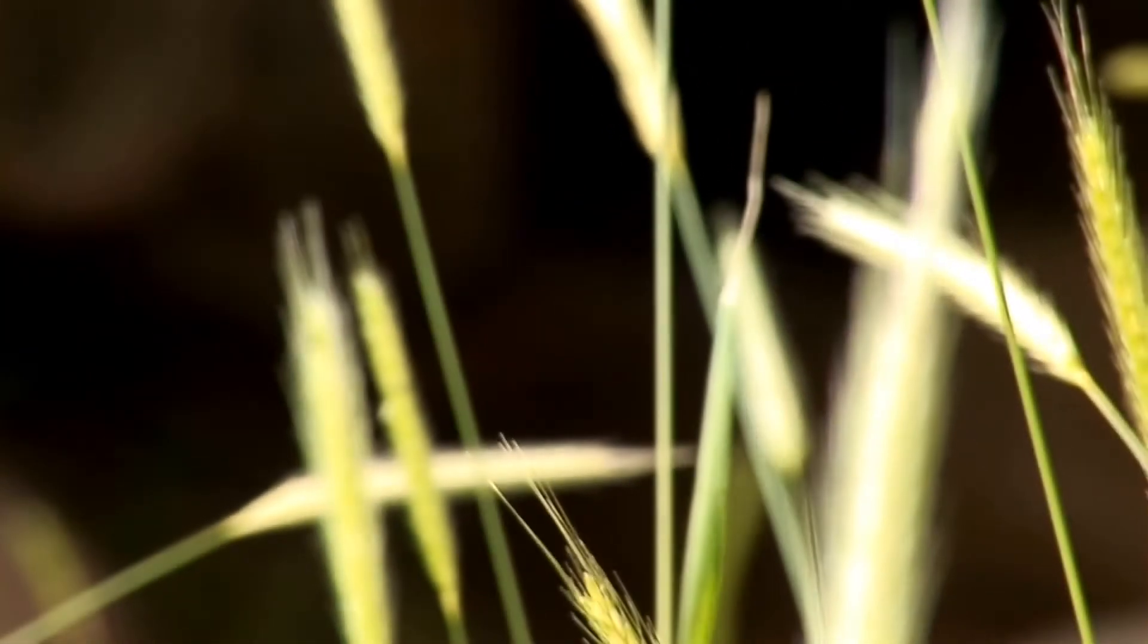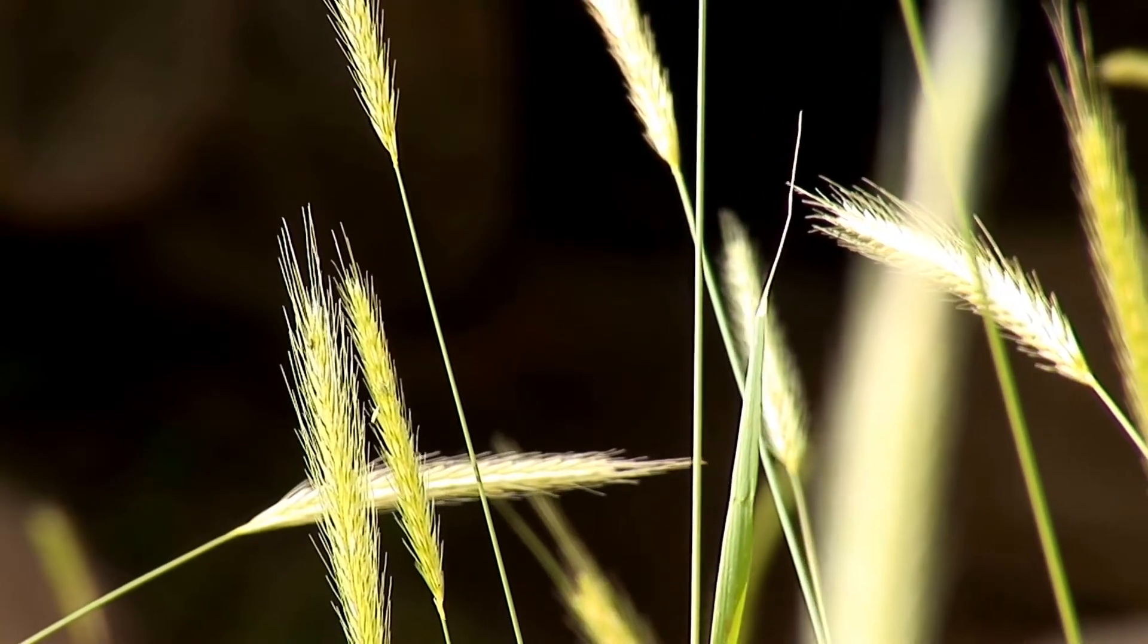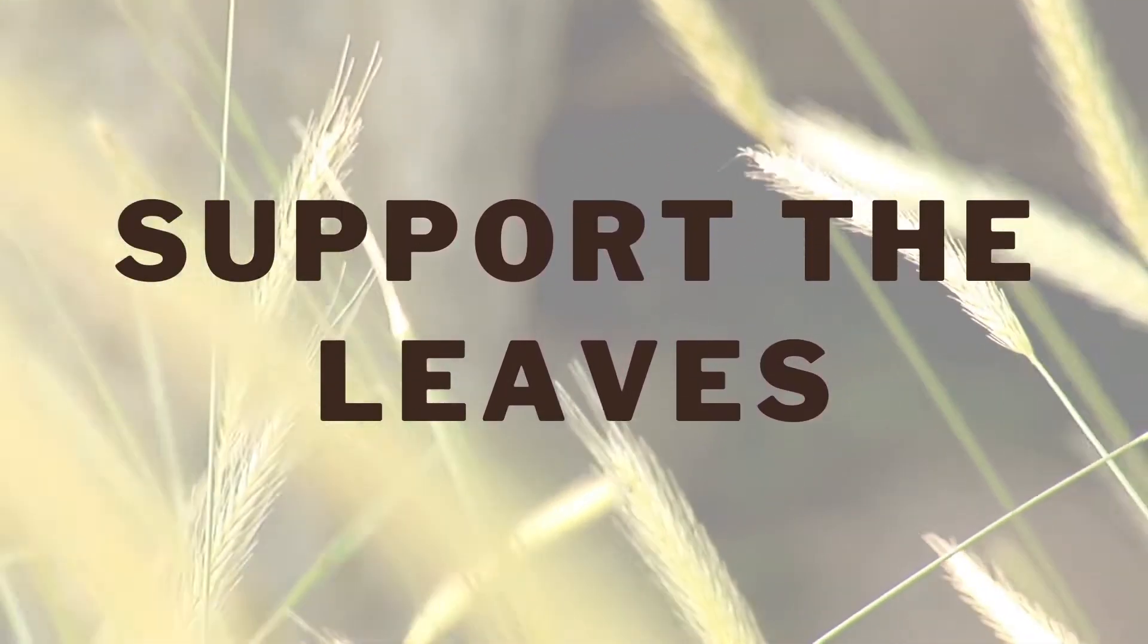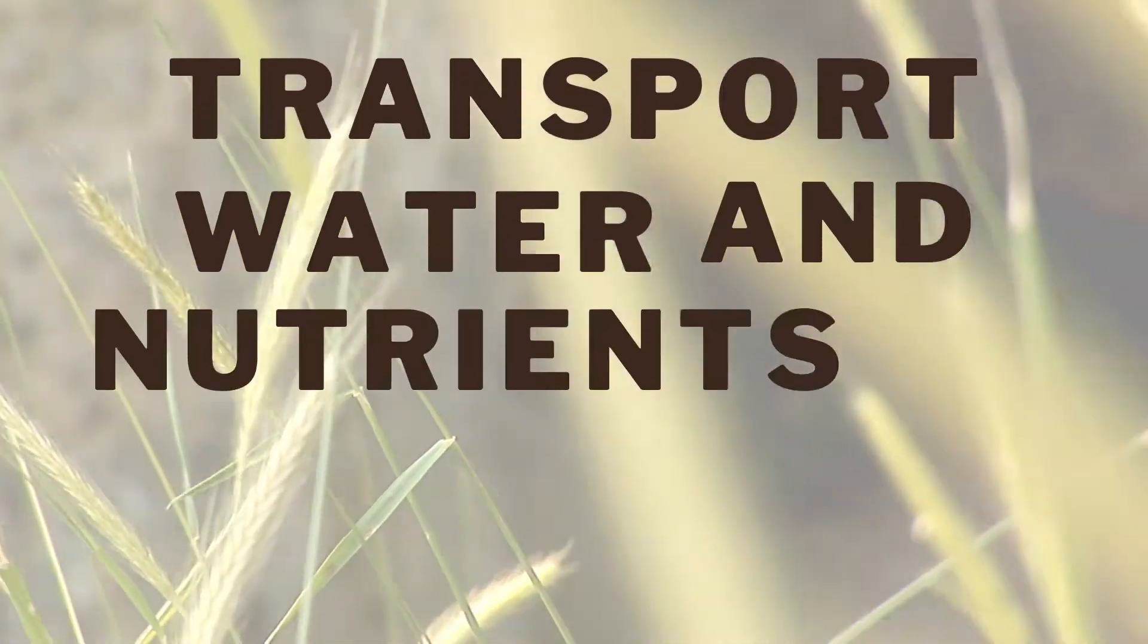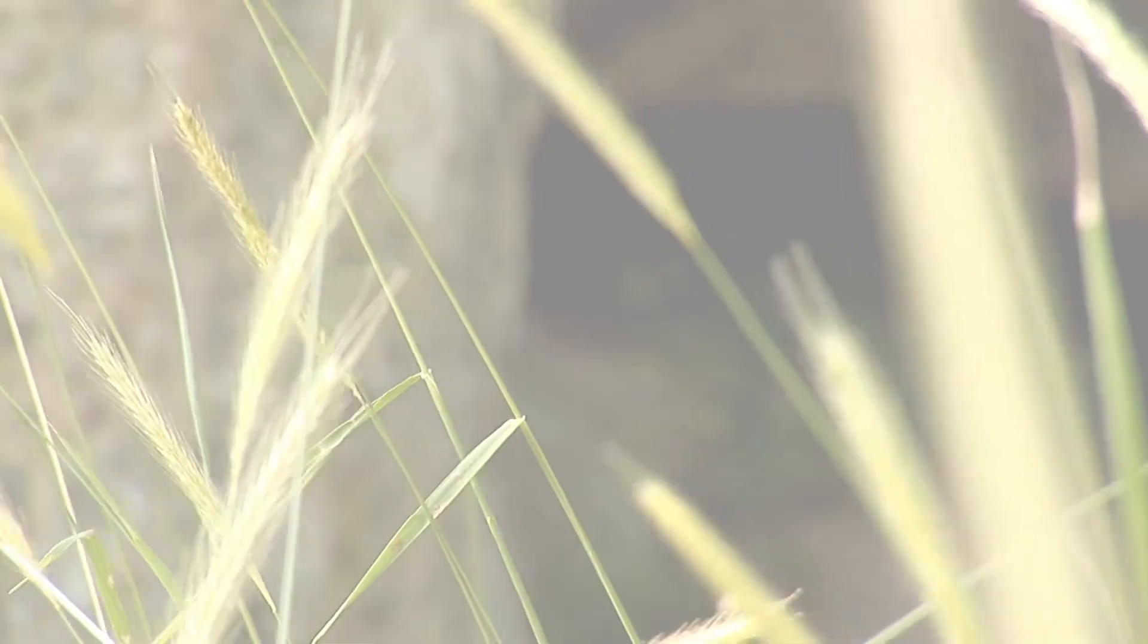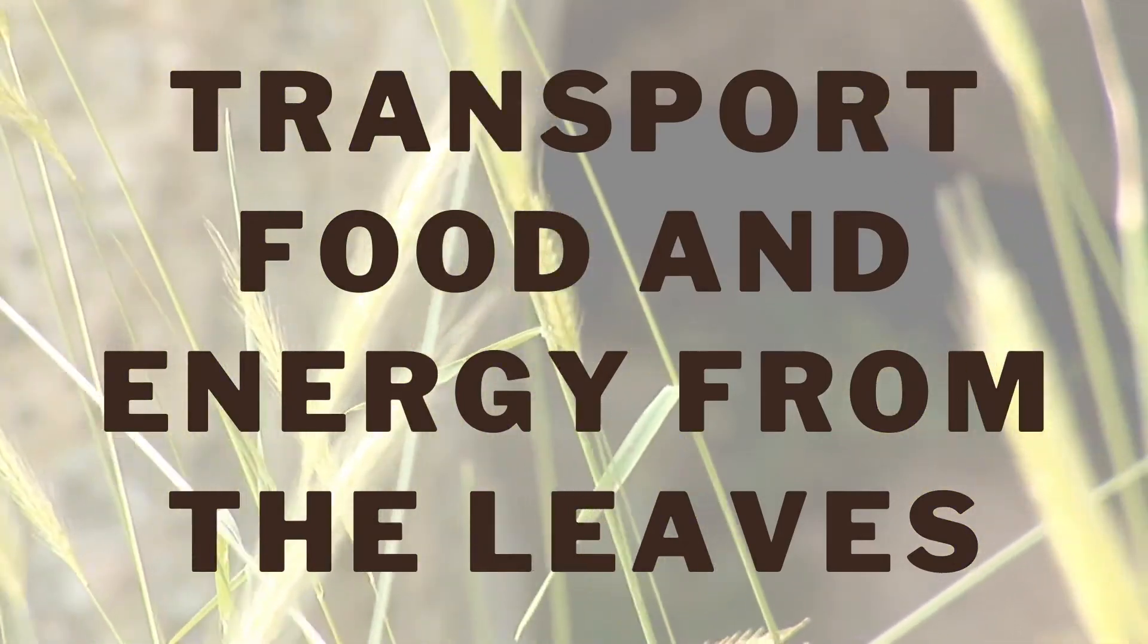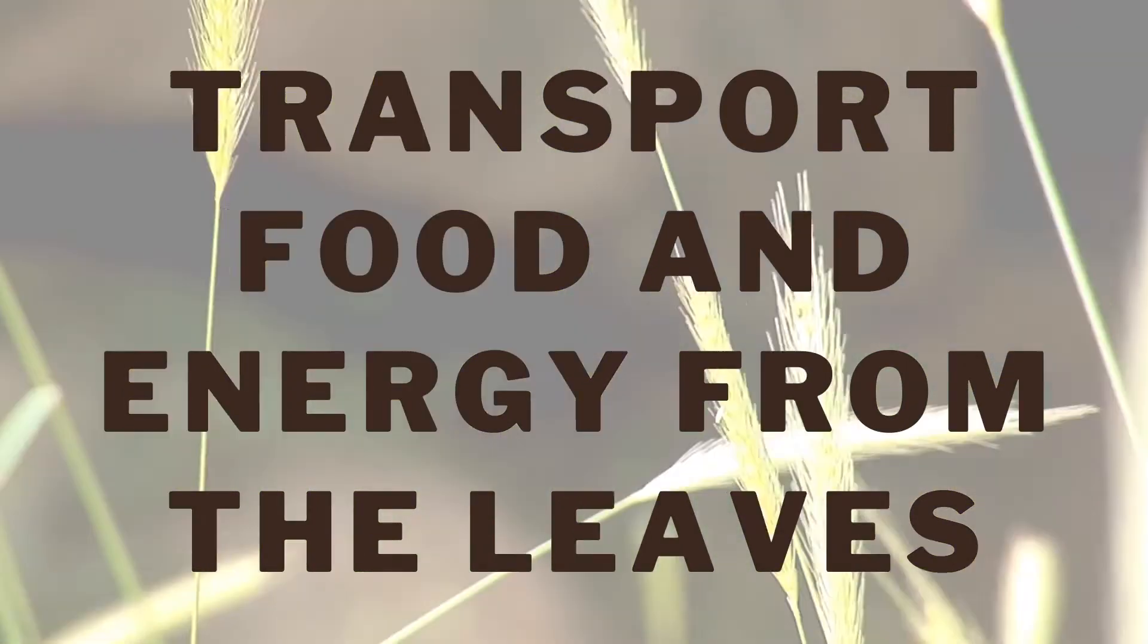The stem is the main stalk of a plant that develops buds and shoots and usually grows above the ground. The primary functions of the stem are to support the leaves, transport water and nutrients to the leaves, and to transport food and energy from the leaves to other parts of the plant, including the roots.